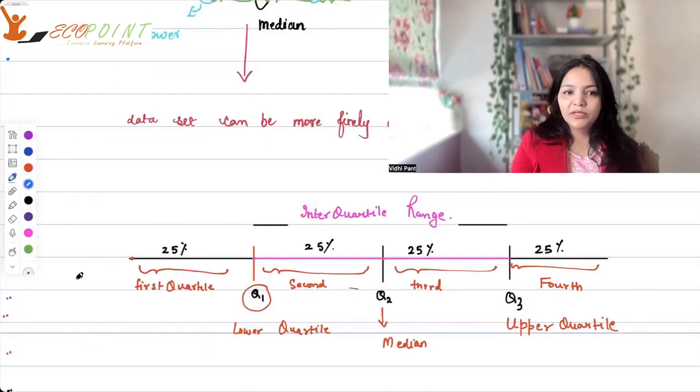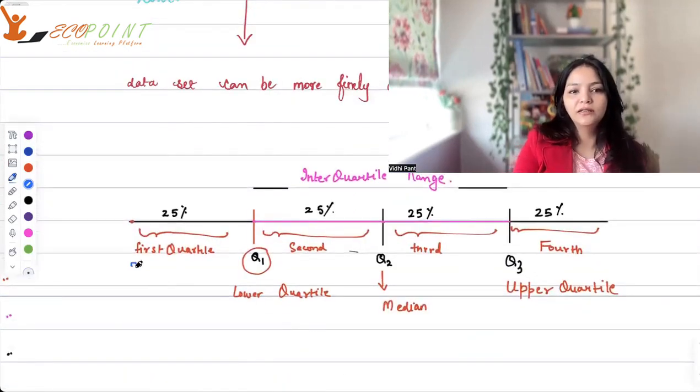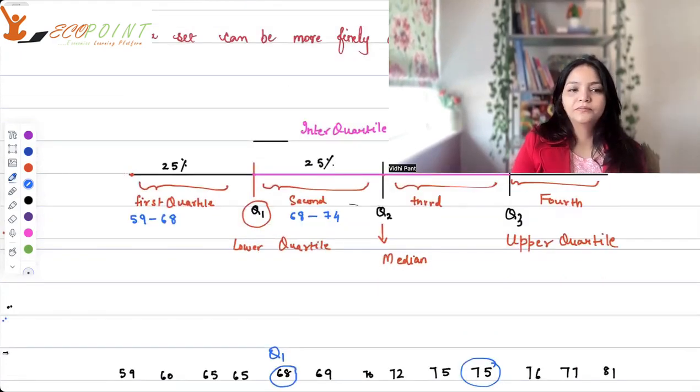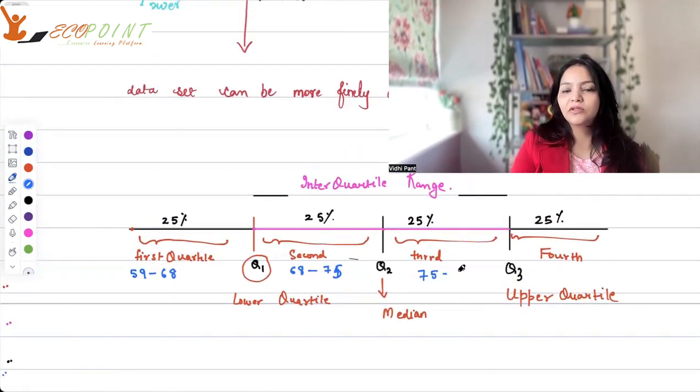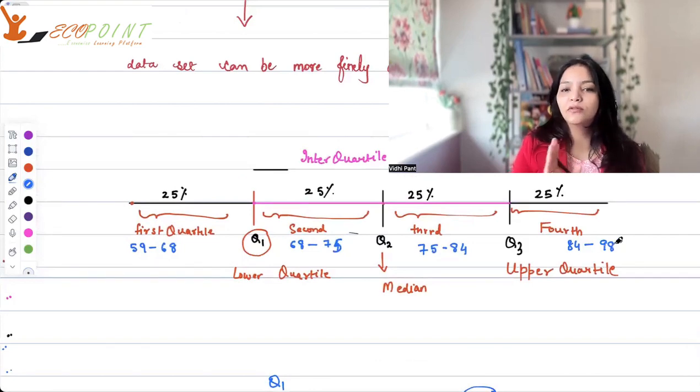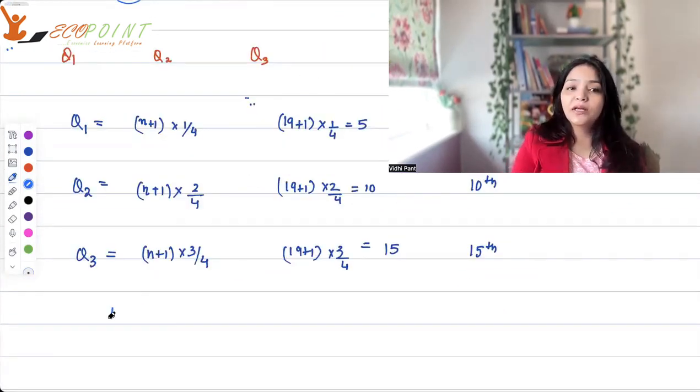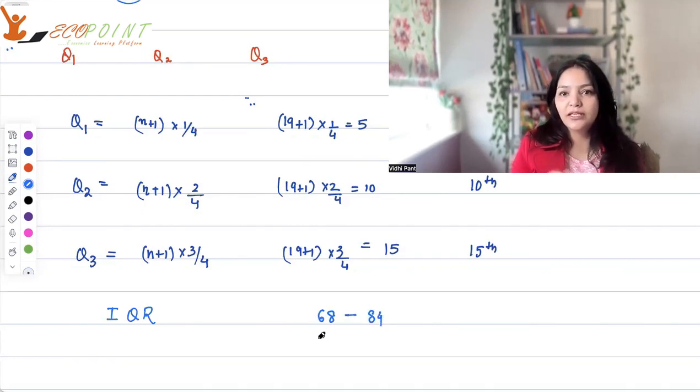Now, if we represent this data in this line, then my first quartile basically, values are starting from 59. So, 59 to 68 gives me my first quartile. Then 68 to 75 is my second quartile and the third quartile is 75 to 84 and 84 to 98 is your fourth quartile. In this, if someone asks you what is the interquartile range, interquartile range clearly will be from Q1 that is 68 to Q3 that is 84.